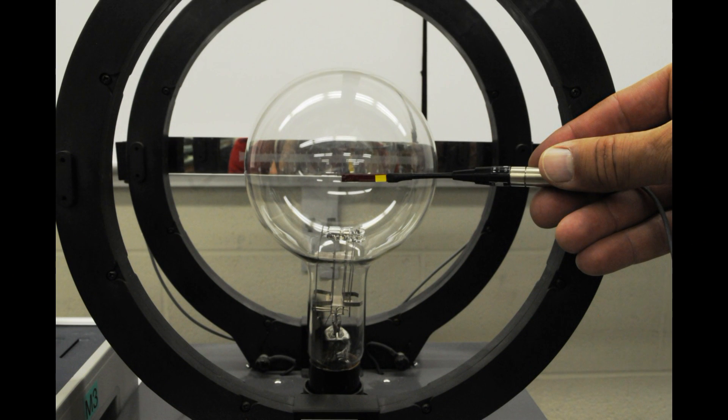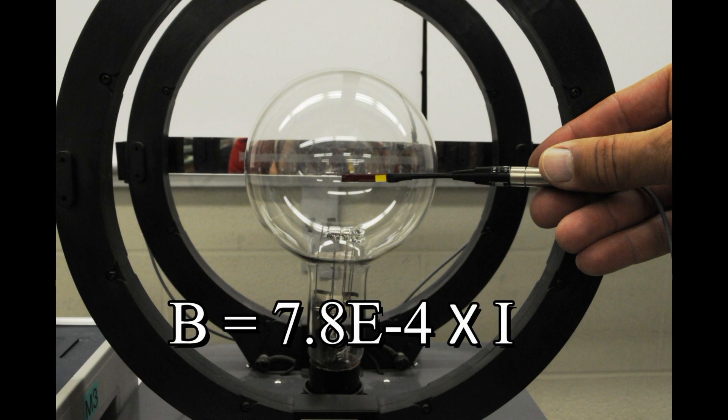Go ahead and measure the magnetic field between the coils. Again, slightly rocking the probe to get the maximum reading. But because you cannot reach the center, you'll get a more precise result by measuring the current i and using the theoretical prediction for the B-field produced by these two coils of 7.8 times 10 to the minus 4 times i. Now you're prepared to determine the mass of an electron.